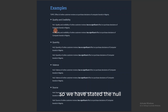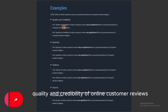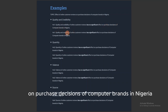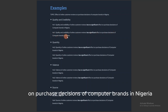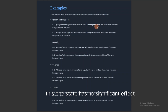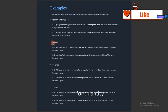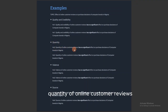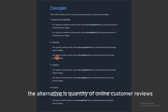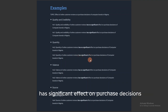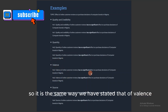For quality and credibility: the null hypothesis is 'Quality and credibility of online customer reviews has no significant effect on purchase decisions of computer brands in Nigeria.' The alternative hypothesis is 'Quality and credibility of online customer reviews has significant effect on purchase decisions of computer brands in Nigeria.' Similarly, for quantity: the null hypothesis is 'Quantity of online customer reviews has no significant effect on purchase decisions of computer brands in Nigeria,' and the alternative is 'Quantity of online customer reviews has significant effect on purchase decisions of computer brands in Nigeria.' The same structure applies to valence and source.